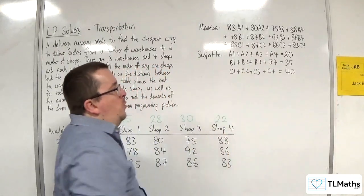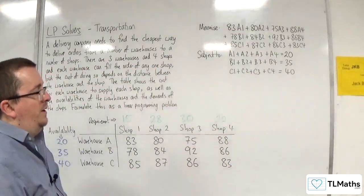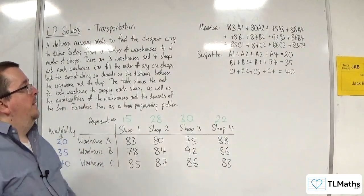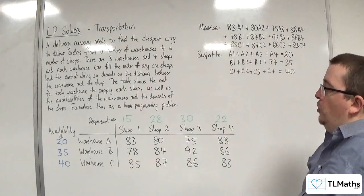When actually they only require 22. And instead they're going to get the whole 95, which they don't want. So what I need is a constraint for each of the shops.